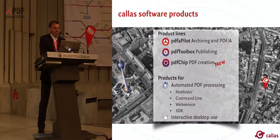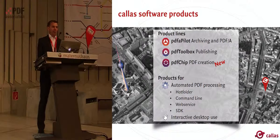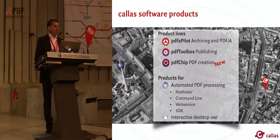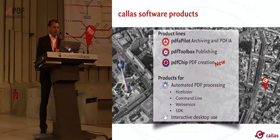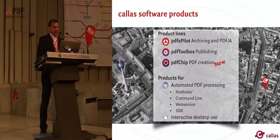Callas Software is a PDF company right in the center of Berlin, close to Alexanderplatz. We've got three product lines: PDF-A Pilot for PDF-A and archiving, PDF Toolbox for publishing, and the quite new product PDF Chip for PDF creation. The first release of PDF Chip came out at the beginning of this year, and that is the product I want to introduce you to. Our products are mainly about automation, so PDF Chip is also about automated PDF creation.